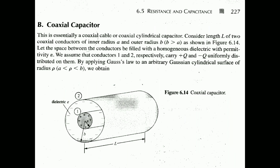Next is the coaxial capacitor. A coaxial cable has an inner conductor and an outer conductor. The coordinate system here is cylindrical — circular cylindrical coordinates. We assume the inner conductor carries positive charge and the outer conductor carries negative charge, with a dielectric material in between. The inner conductor has radius a and the outer conductor has radius b.